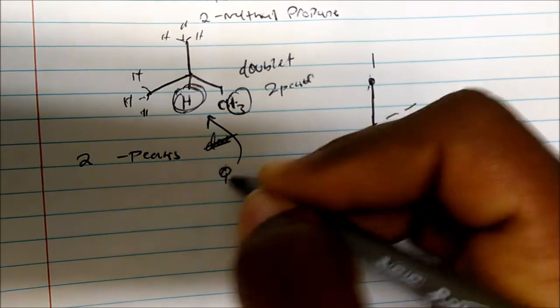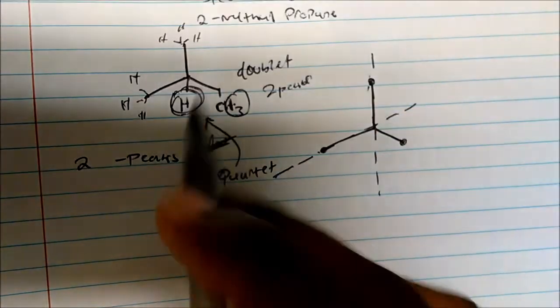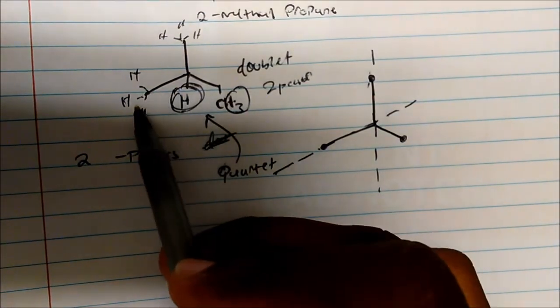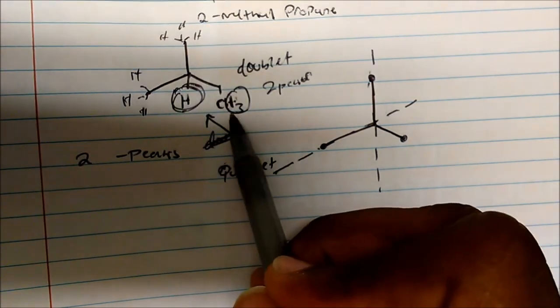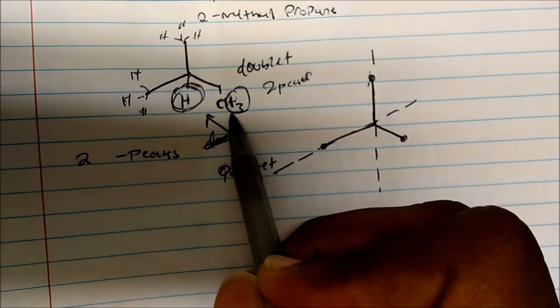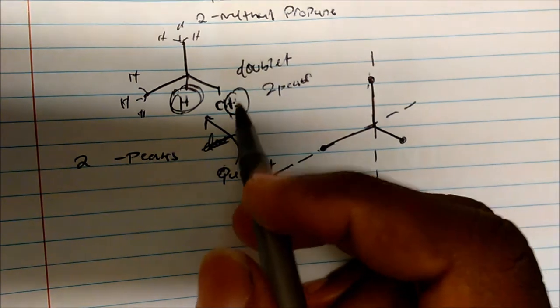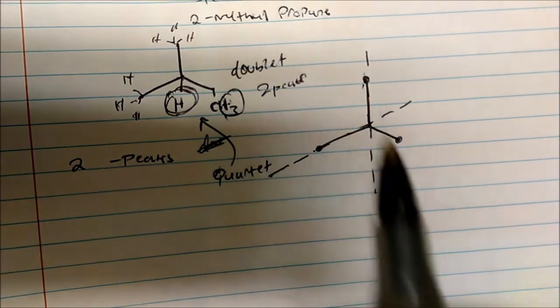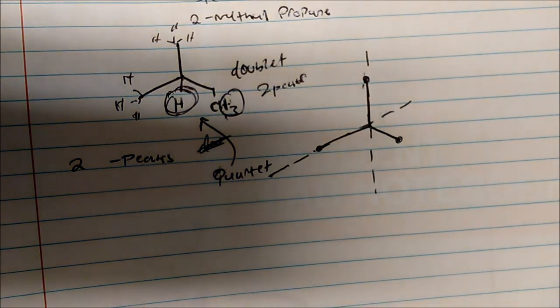Notice that this hydrogen didn't split. Let's see, we have one, two, three, four, five, six, seven, eight, nine hydrogens, and then we say okay, well nine plus one is ten and we get something that I can't even pronounce. So this is the idea of being in the same chemical environment.